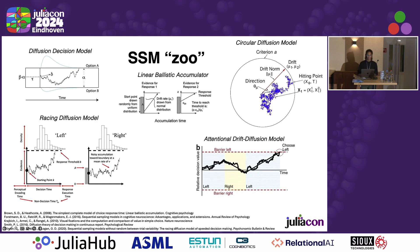There's a wide range of these models, and they vary as a function of how much evidence might be competing with one another, as well as the type of response you might be interested in, which could be discrete or something more continuous. They also attempt to characterize different cognitive processes, such as how attention might change or vary the drift as a function of time.